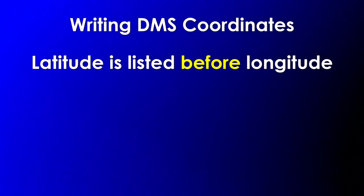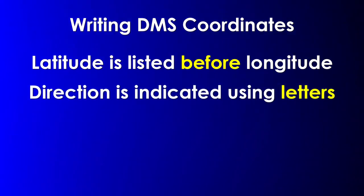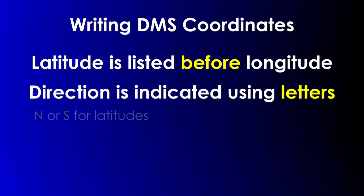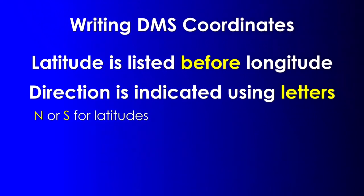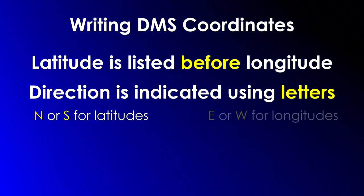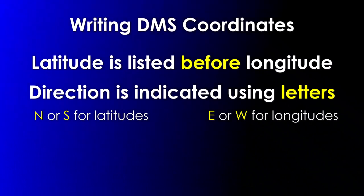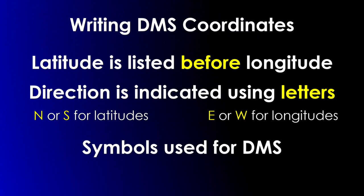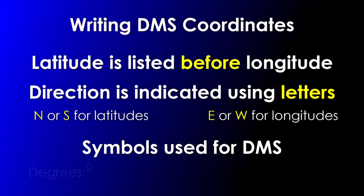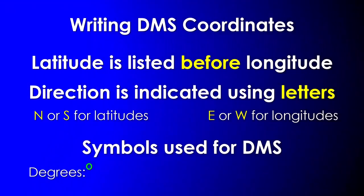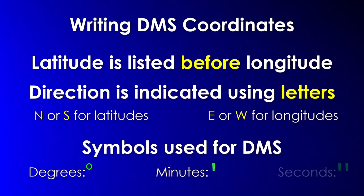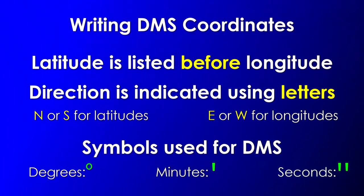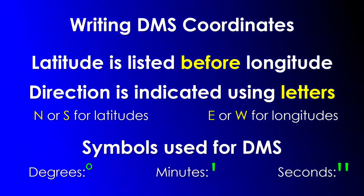We indicate direction by using letters. We use N or S for latitudes that are north or south of the equator, and E or W for longitudes that are east or west of the prime meridian. You can see the symbols that are used. The degree symbol is used for degrees. Minutes is a single stroke and seconds is a double stroke.